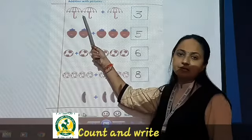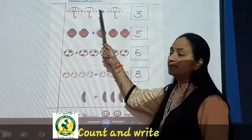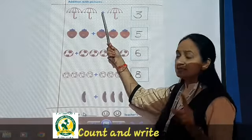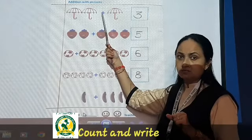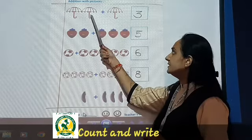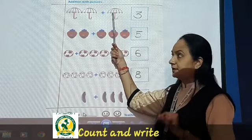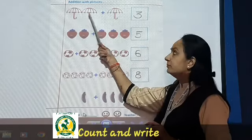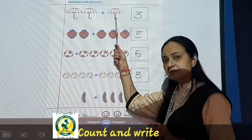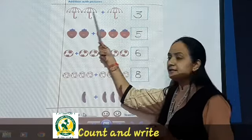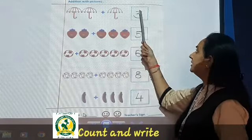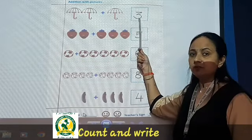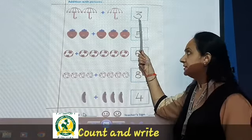See here you can see the umbrellas. Let us count — one, two. Then there is a plus sign here, this is called addition. Plus sign, then one — so two plus one. Count all together: one, two, three. And here you will write in the box three. Yes, you have to write three.